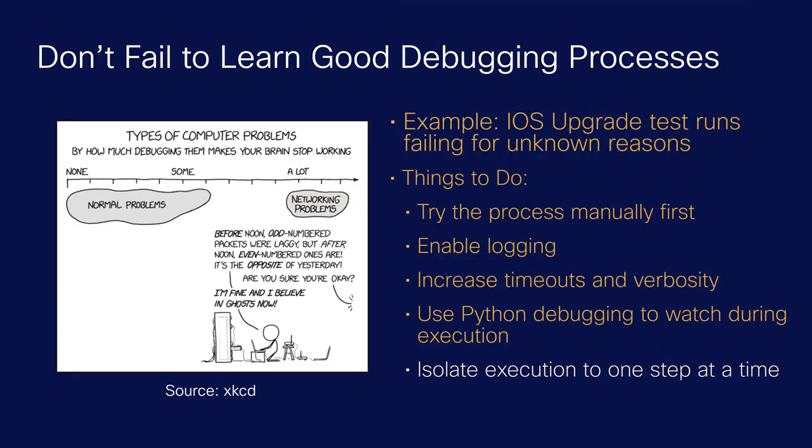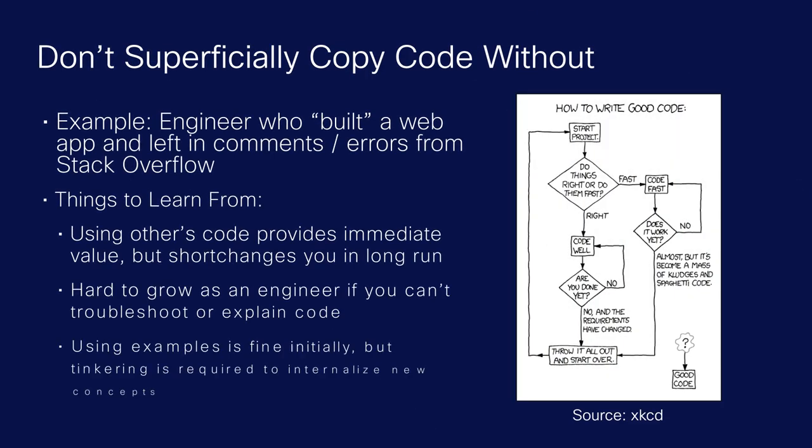One final debugging tip that's especially helpful when working with Ansible: isolate your execution one step at a time. Rather than doing all your tasks at once in an Ansible playbook, comment out the code and focus on one particular component — execute that one step at a time, see the output, make sure it's working, then add the next step from there.